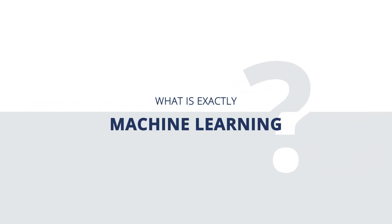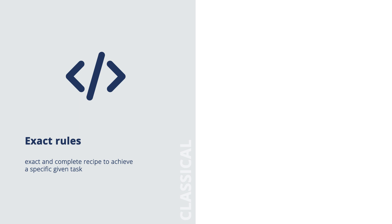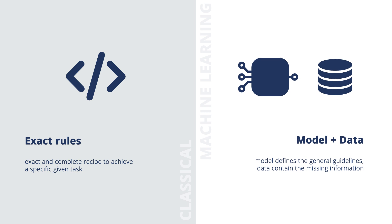But what is machine learning exactly? What's behind these magical-looking algorithms, and how do they use data to work so well? Formally, machine learning is the science of getting computers to realize a task without being explicitly programmed. The big difference between classical and machine learning algorithms lies in the way we define them: classical algorithms are given exact and complete rules to complete a task.